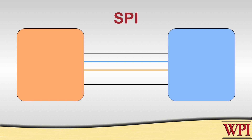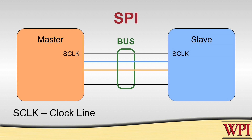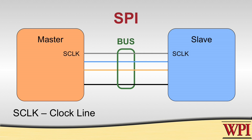SPI is the simpler of the two from an electrical standpoint, and it's simpler from a protocol or software standpoint as well. With SPI, what we have are four I/O lines that together are called the bus. Let's go through these four I/O lines that are going between the master and the slave. The lines are called SCLK for the clock, and MISO for master input, slave output.